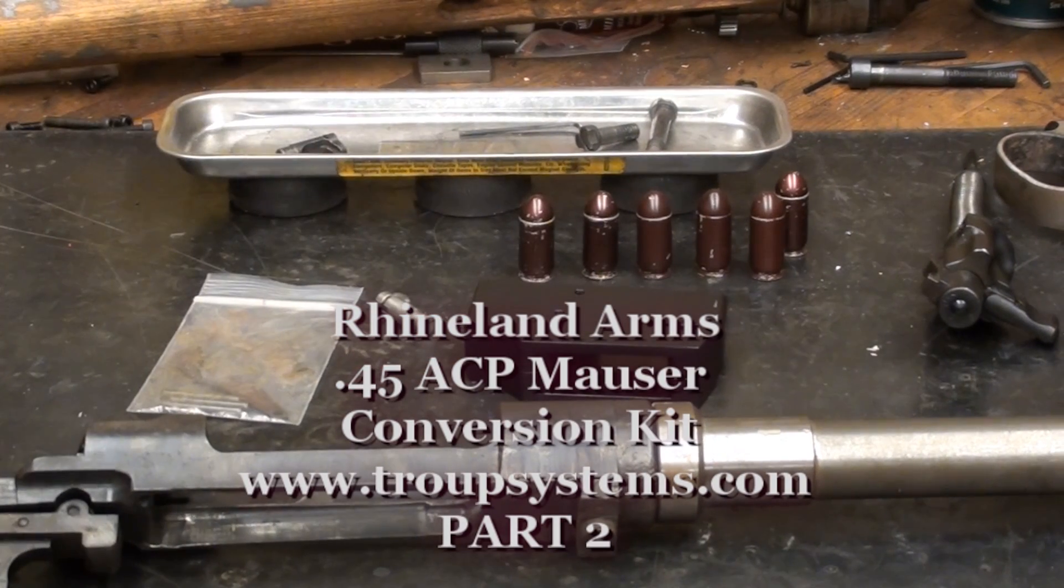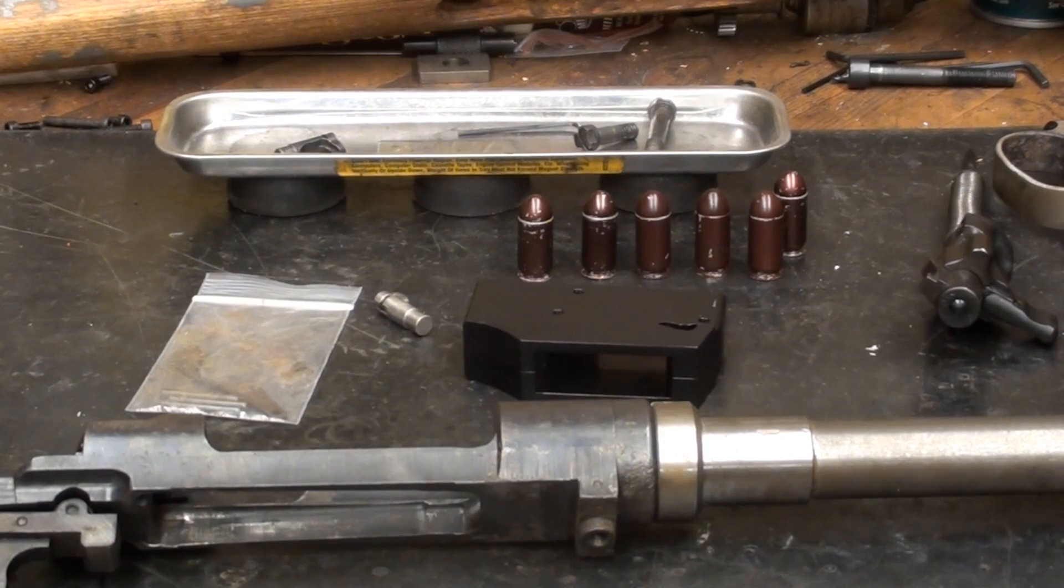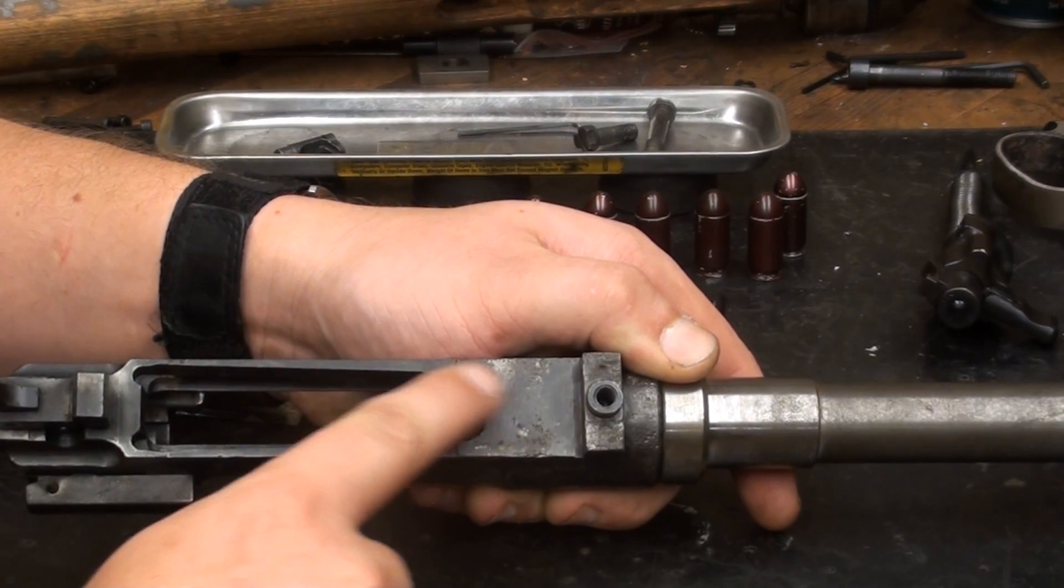The first step of this conversion process is going to involve actually checking the receiver magazine feed rails, which are basically these right here.